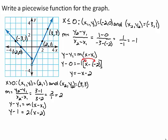You get y minus 1 equals 2 times the quantity x minus 2. Distributing the 2, you get y minus 1 equals 2x minus 4. Now solve for y by adding 1 to each side, leaving you with y equals 2x minus 3. So when x is greater than 0, the graph is the line given by y equals 2x minus 3.